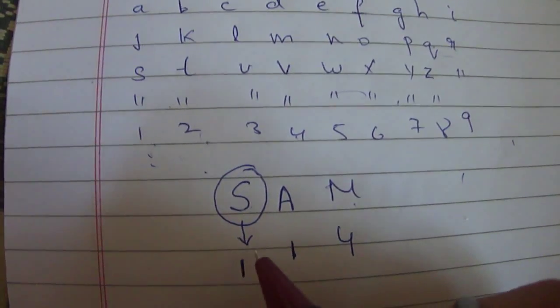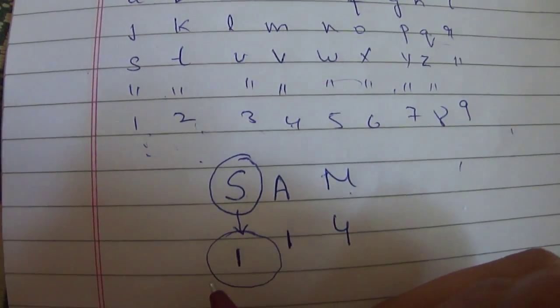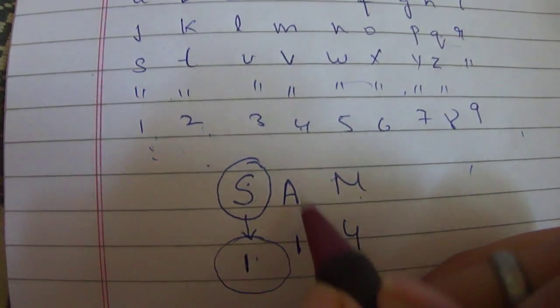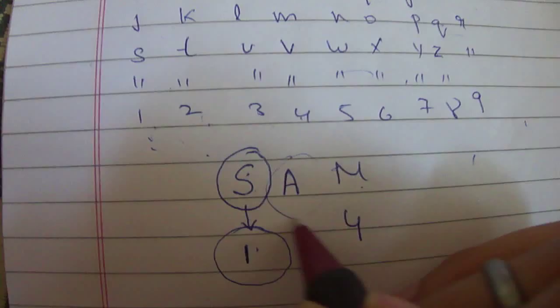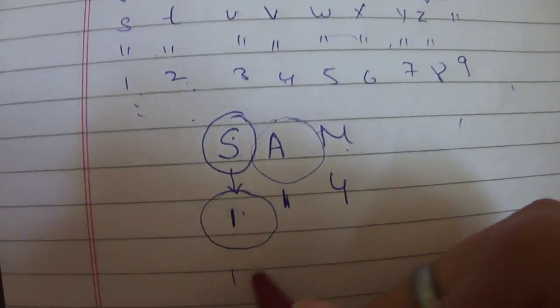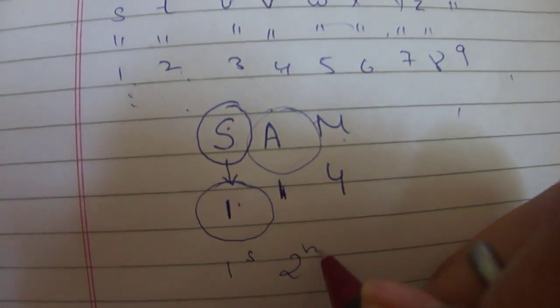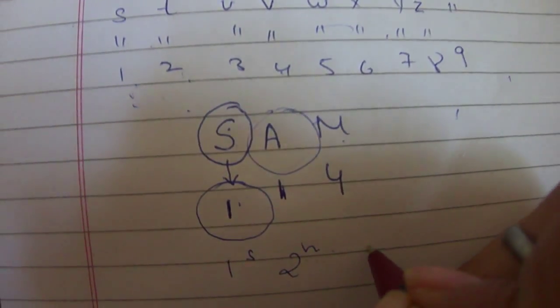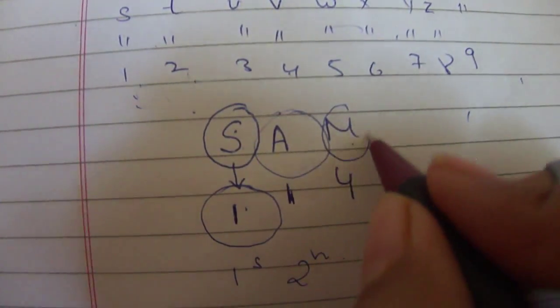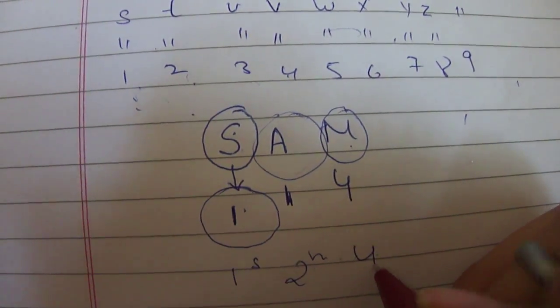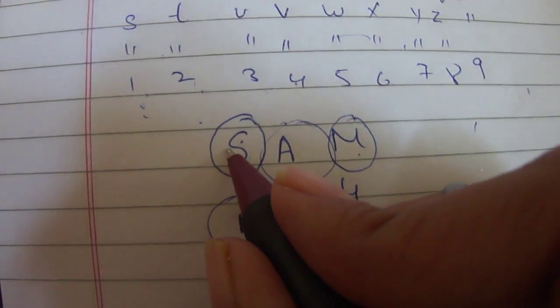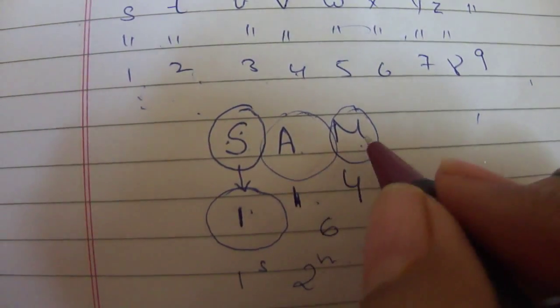So what will happen is that for the first year of Sam's life the character of S will be more prominent. Then the second year the character of A will be more prominent. And then the next 4 years, so from 3 to 6, the qualities of M will be prominent in Sam's life. So for the first 6 years: the first part will be covered by S, then A, then 4 years by M.